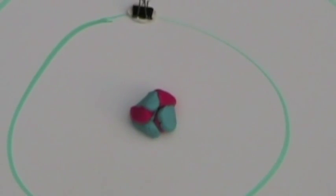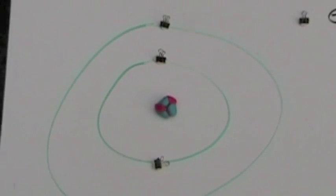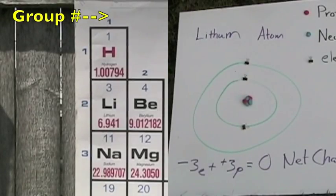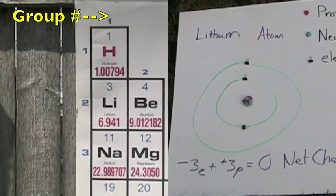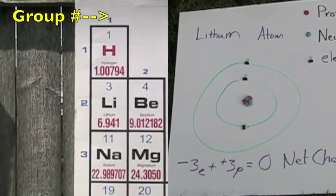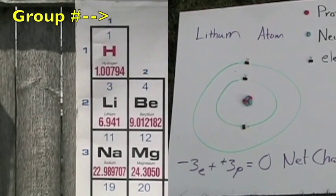And then we go out a little bit on the inner shell. You have 2 electrons max. And then on the outer shell, we have 3 protons, so that means we have a total of 3 electrons. Our group number helps us to determine the number of electrons on the outer shell. Group 1 has 1 electron on the outer shell.